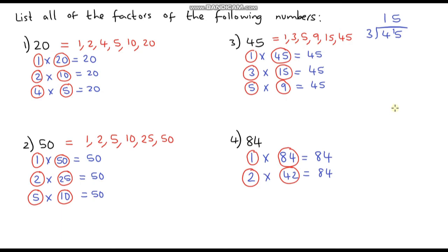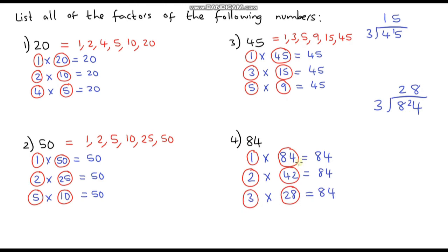Now 3 is also a factor of 84 — that might not be immediately obvious, but if we do our bus stop method: 3 goes into 8 two times with 2 remainder, and 3 goes into 24 exactly 8 times. So 3 times 28 is 84. Now 4 also goes into 84 — using the bus stop: 4 goes into 8 two times exactly, and 4 goes into 4 one time. So 4 times 21 is 84.